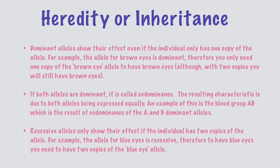To have brown eyes, since the allele for brown eyes is dominant, even if you have just one allele of brown eye, you are going to have brown eyes. If both alleles are dominant, it is called co-dominance. The resulting characteristic is due to both alleles being expressed equally.